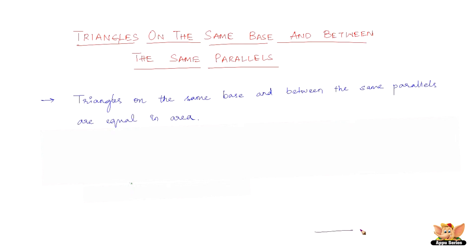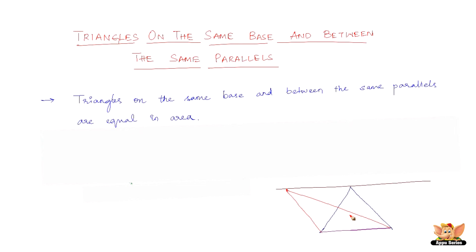Say for example we have one base, and then we have another line parallel to the base — something like this. These two lines are not going to meet each other. Now let us make triangles out of this base — something like this to start off with — and then another triangle on the same base, something like this. Now these two triangles look completely different.